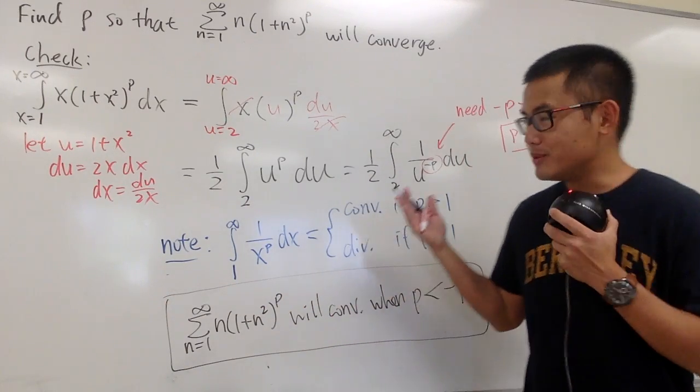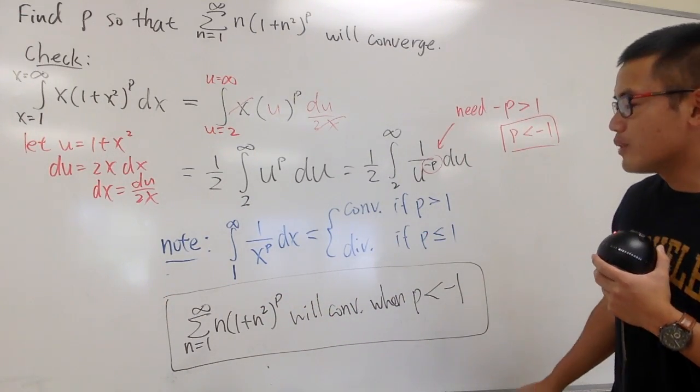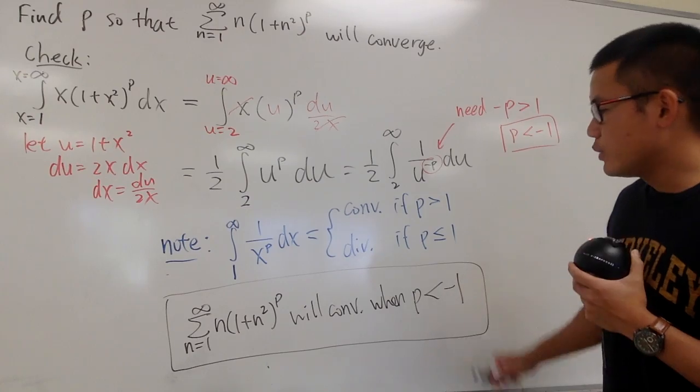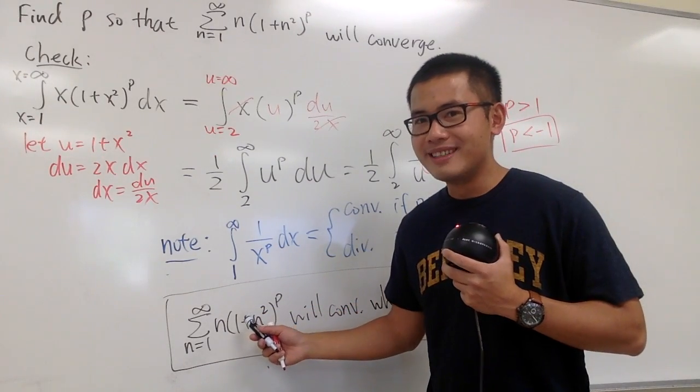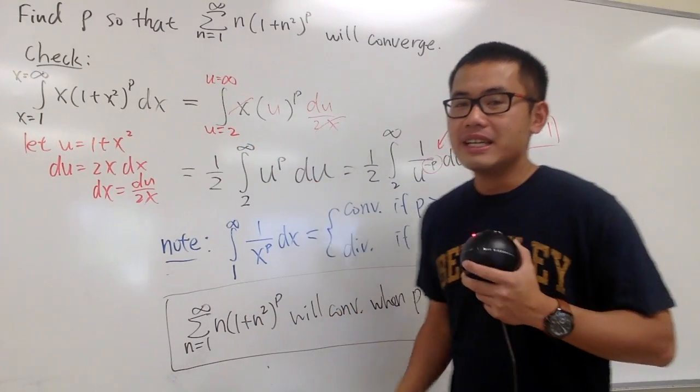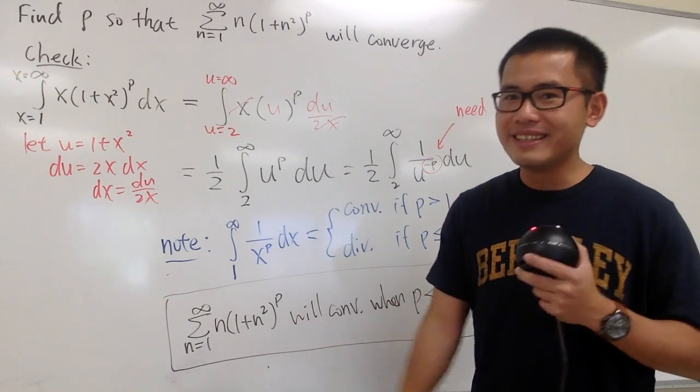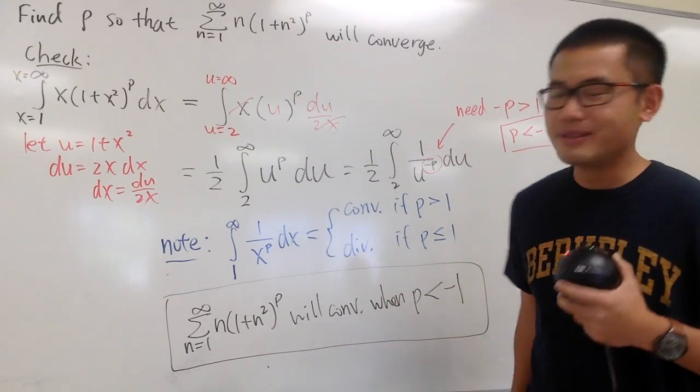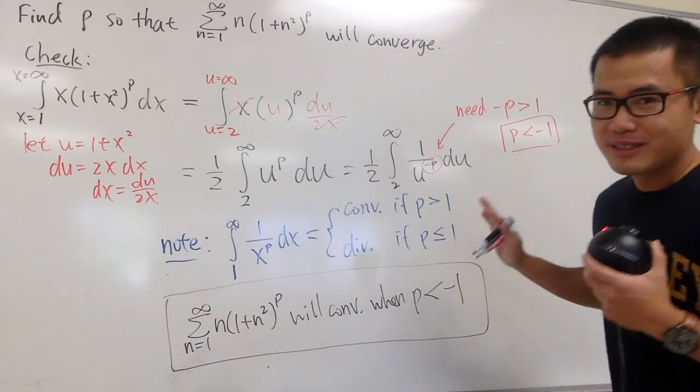If you want to be super legitimate, you have to also argue that when p is less than negative 1, this and the corresponding function is positive, decreasing, and continuous. But anyways, this is the statement. That's it.